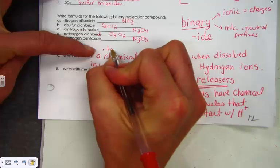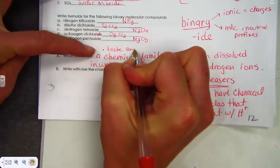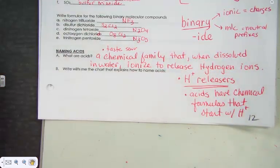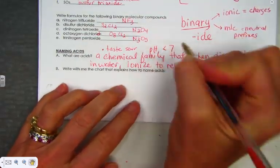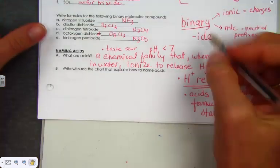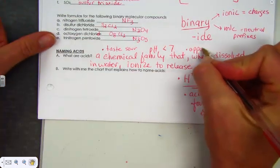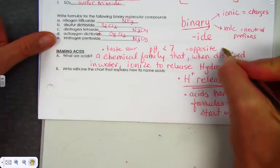Acids taste sour. Think of like citric acid in lemon juice, or citric acid that might be in vinegar even. Acetic acid is in ketchup. They have that sour taste. They have pHs that are lower than 7 on a pH scale. They are the opposite of bases in terms of a chemical family.